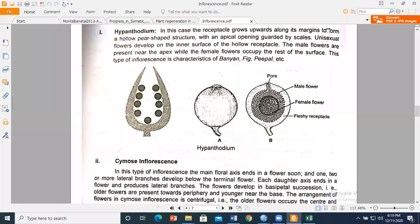This is a special type of inflorescence, in this case the receptacle. The receptacle grows upward and its corners or margins form a pear-shaped structure. It has an apical opening and some scales are present at the opening.